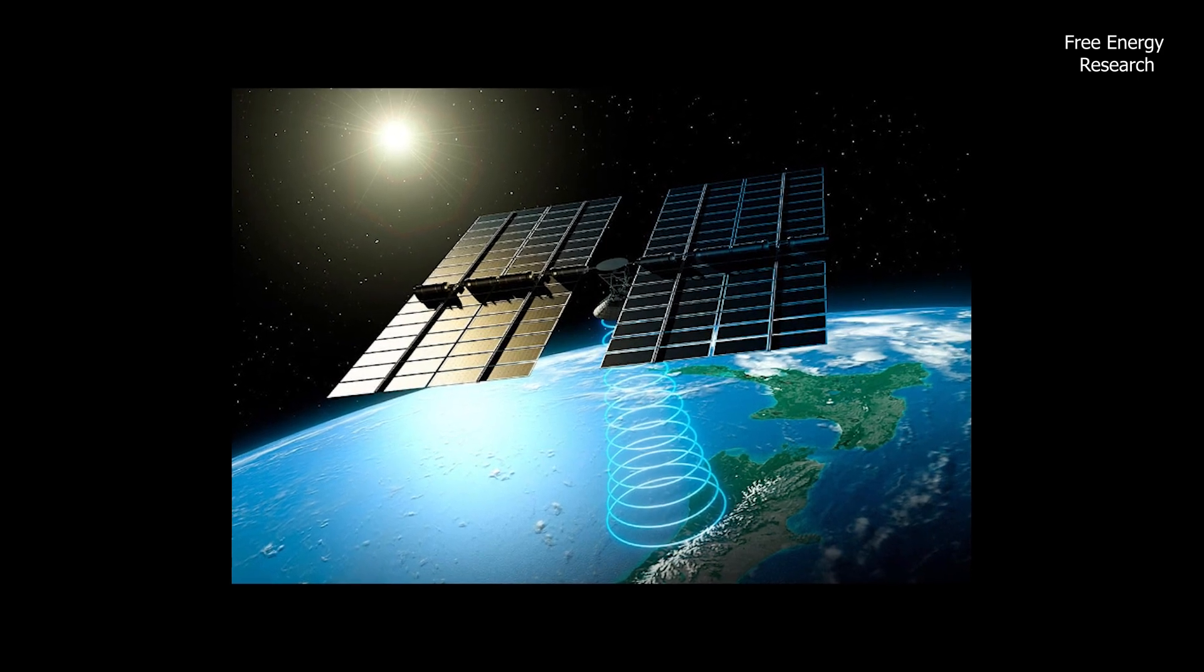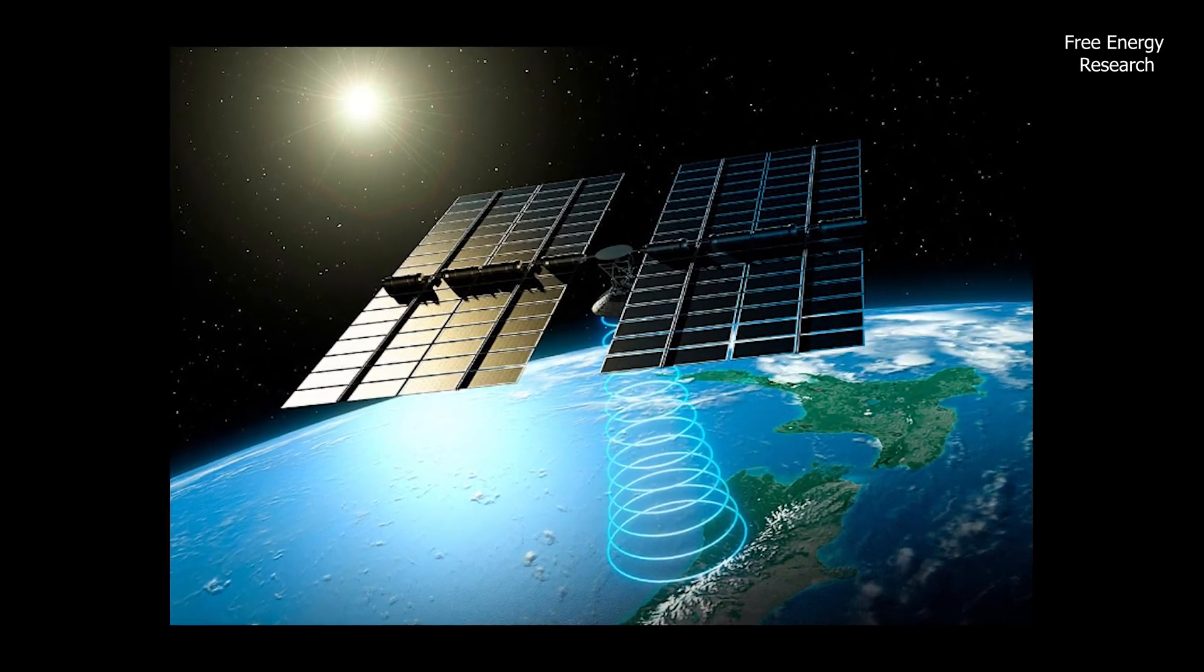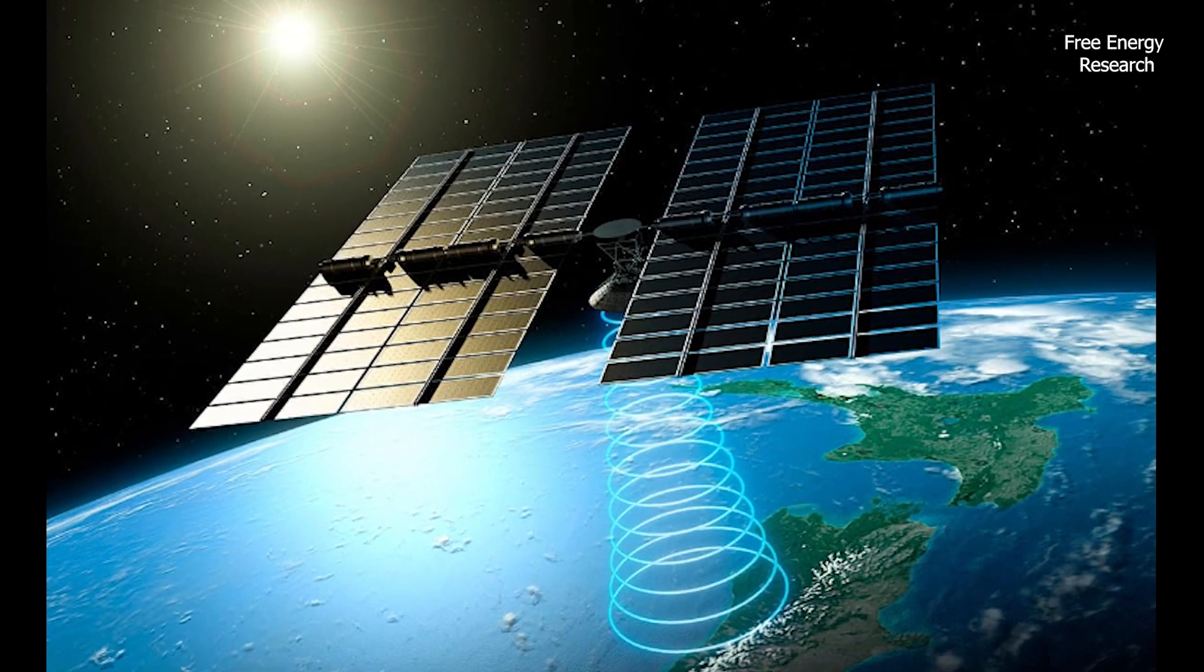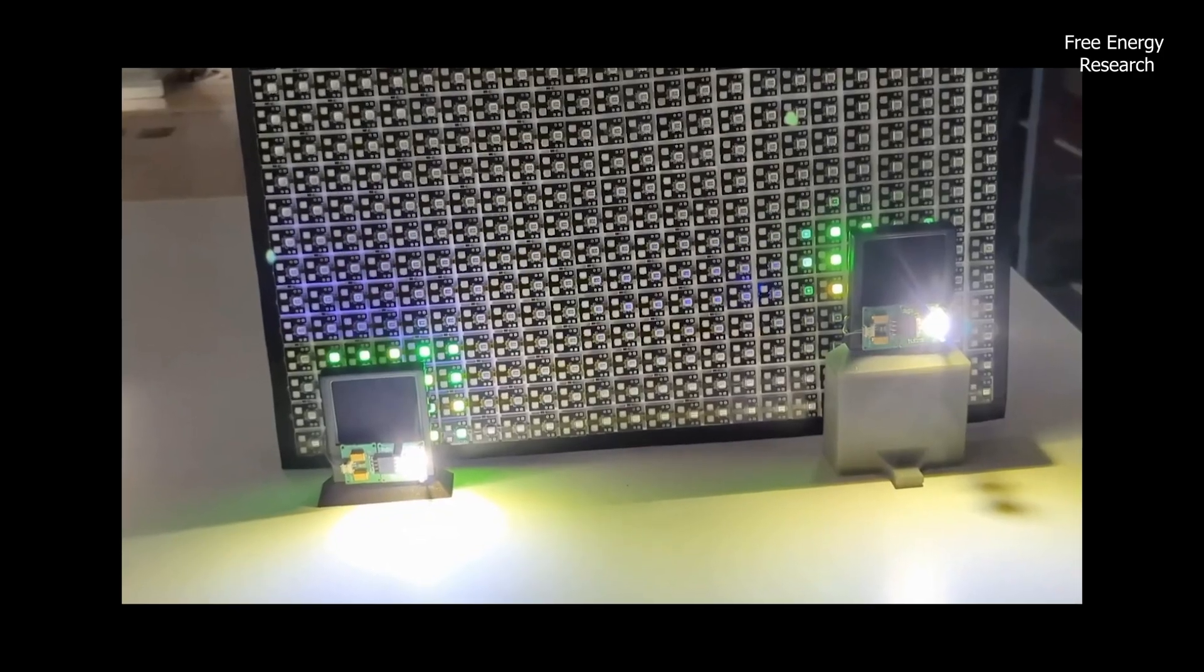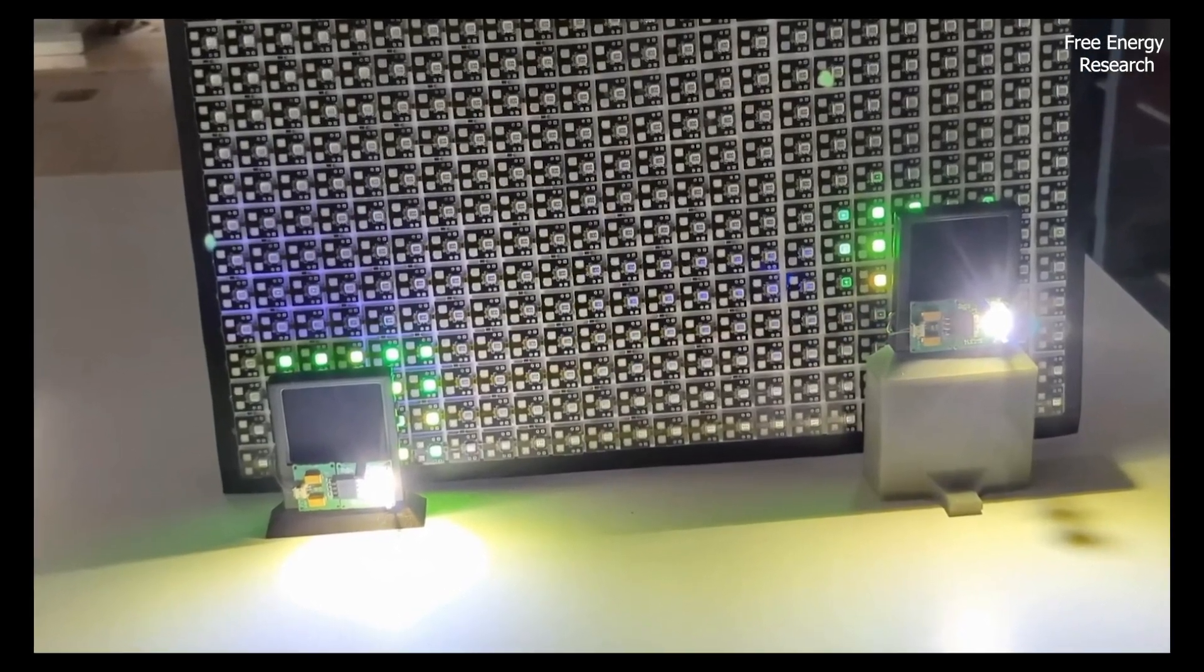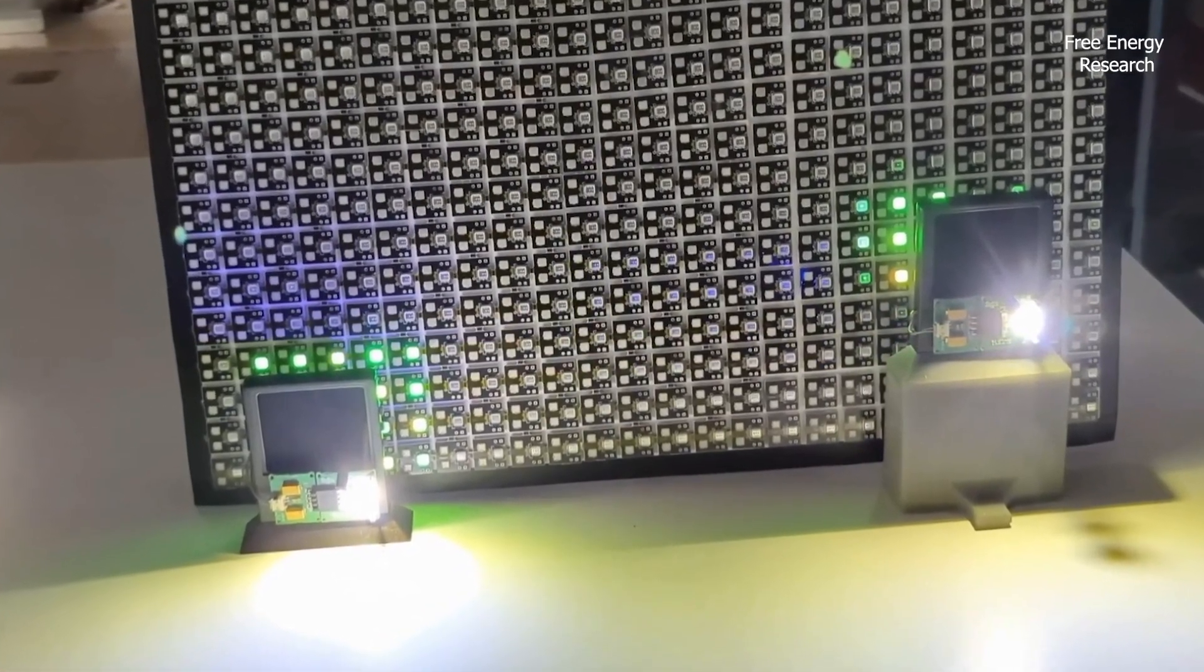MAPLE's transmitters convert the solar energy into a form that can be transmitted to earth, such as lasers or in this case microwaves. The array of transmitters can beam the energy to desired locations, such as a receiving station on earth that feeds the power into the national grid.